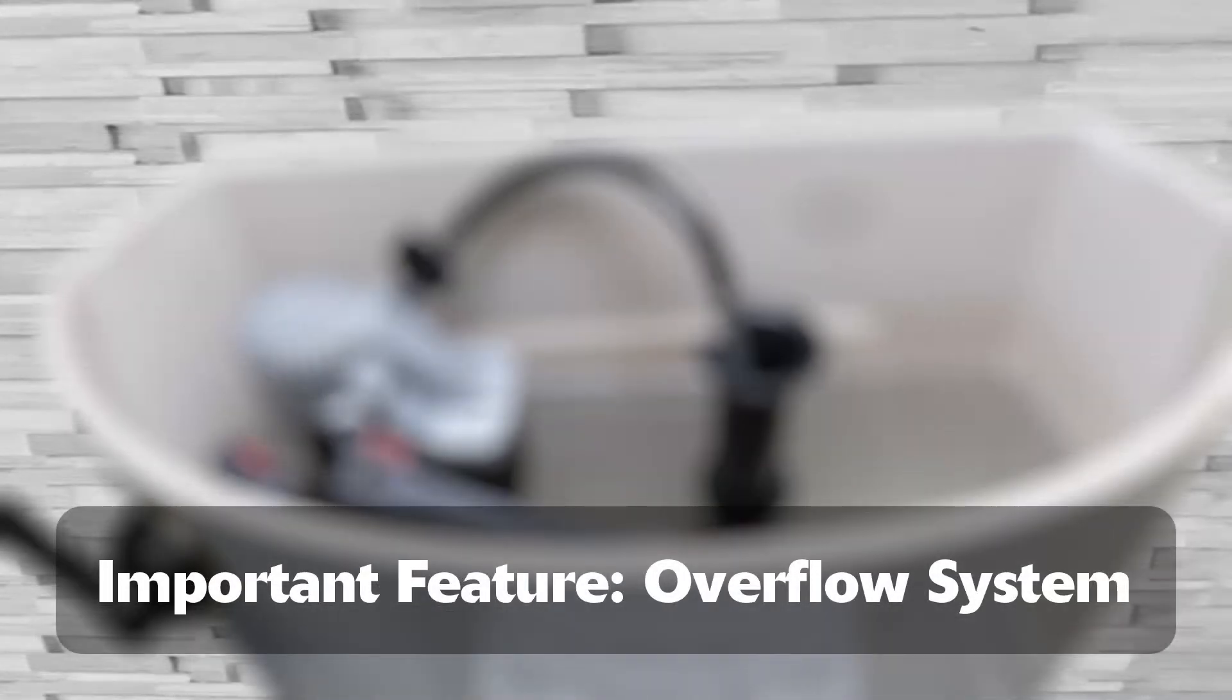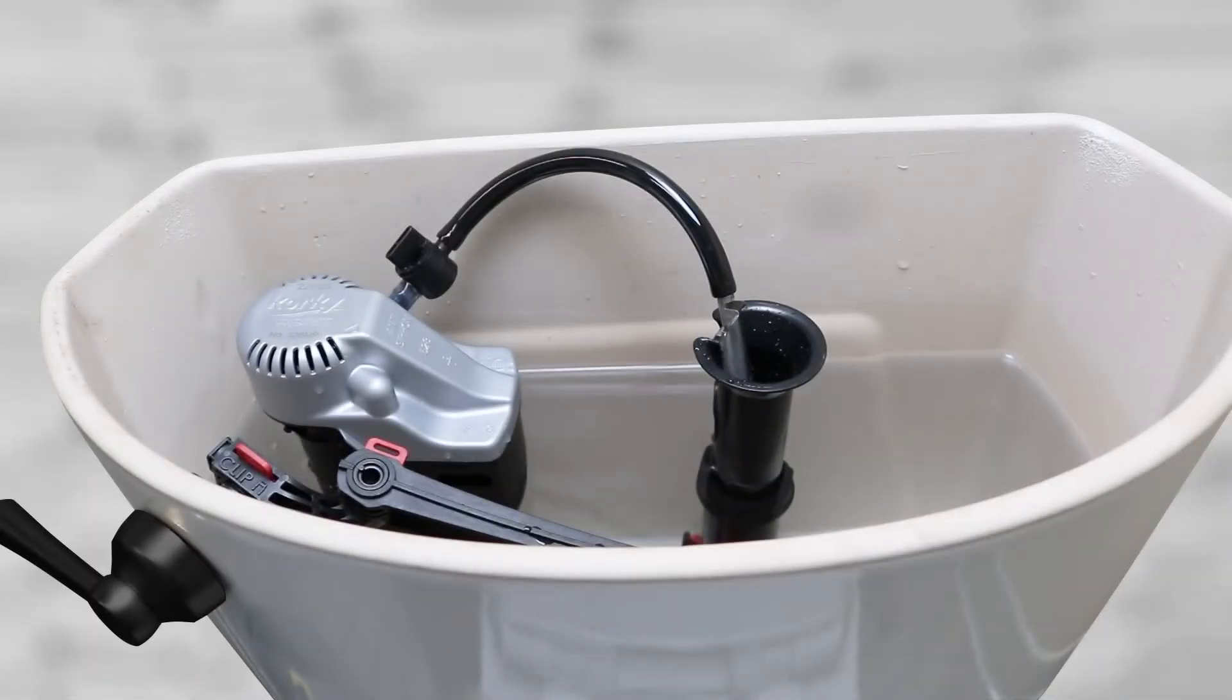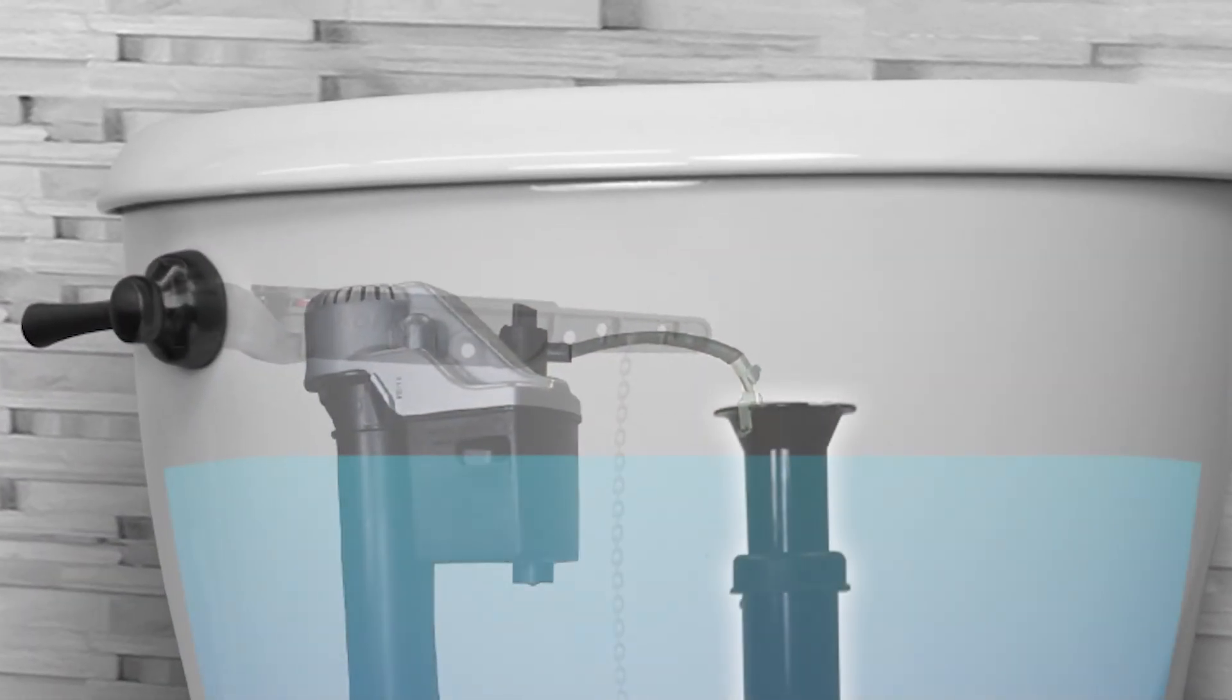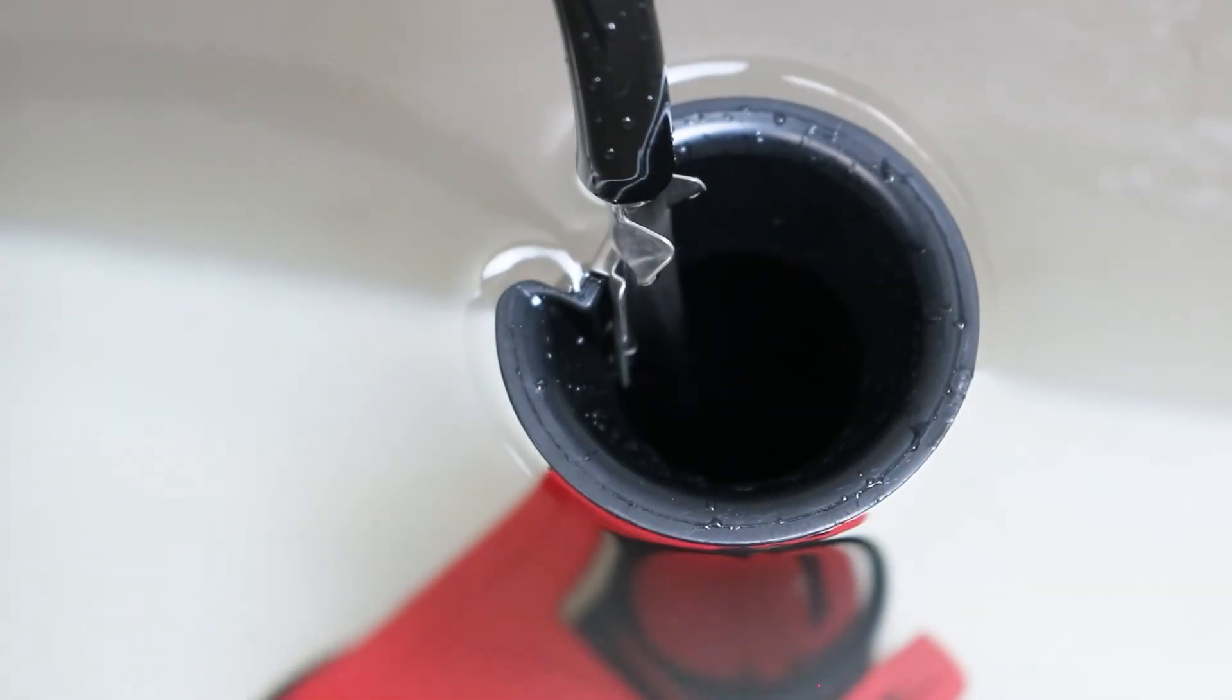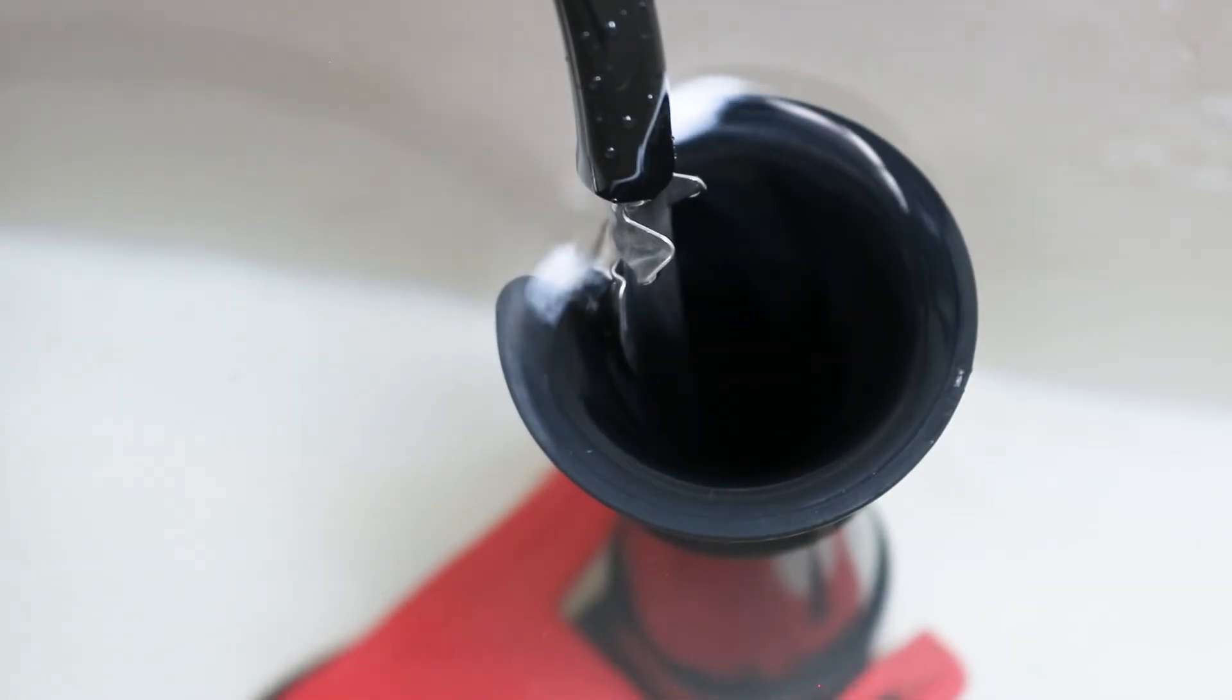An important feature in the toilet tank is the overflow system. The top of the flush valve's overflow tube is half an inch above the tank water level and also below the hole for the tank lever. This positioning prevents the tank from overflowing in case the fill valve fails to shut off.